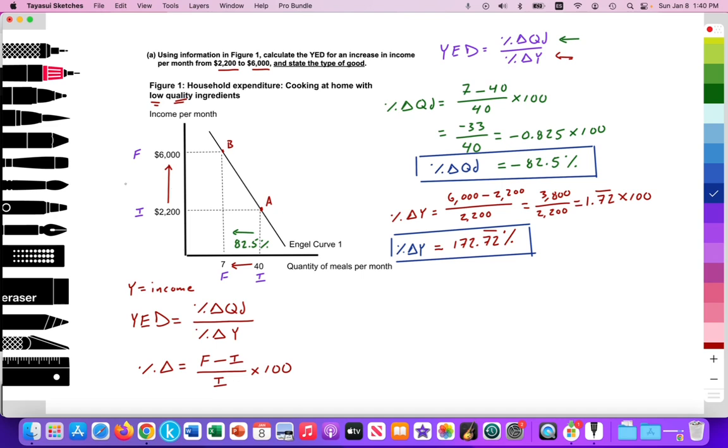So here we have the other half of the formula. The change in income is 172.72 repeating percent. Incomes have increased almost by 200% while the quantity of expenditure has decreased by 82.5%. So now let's put the two together to see what is the YED value.